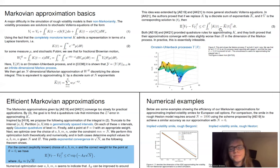And both Alòs, Euch, Bayer and Abi Jaber, Larsson, Pulido provided quadrature rules for approximating K, and they both proved that their approximation converged with rates slightly worse than H in the dimension of the Markov process. So the convergence is essentially n^{-H}. But now H is very, very small, just 0.1 say, and n is the dimension of the Markov process, the dimension of the stochastic differential equation you need to solve. So in practice, this convergence is usually too slow, and it's essentially infeasible in practice.